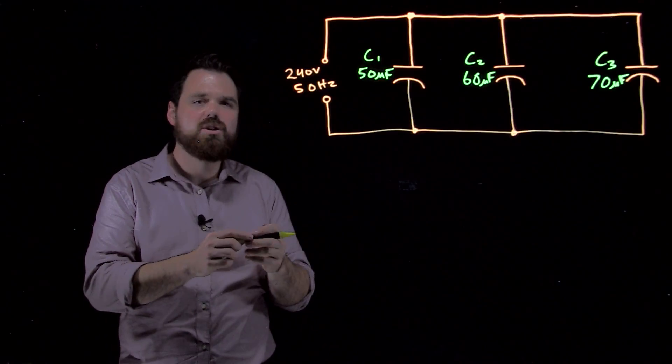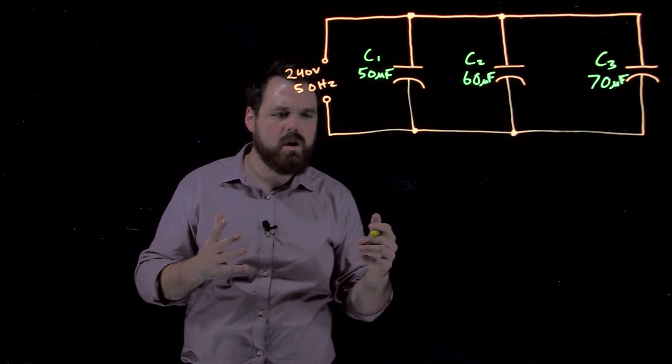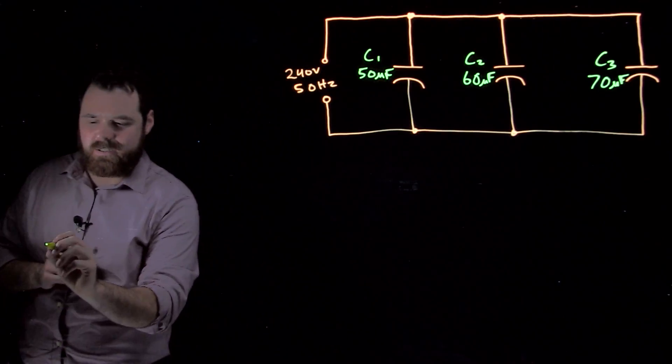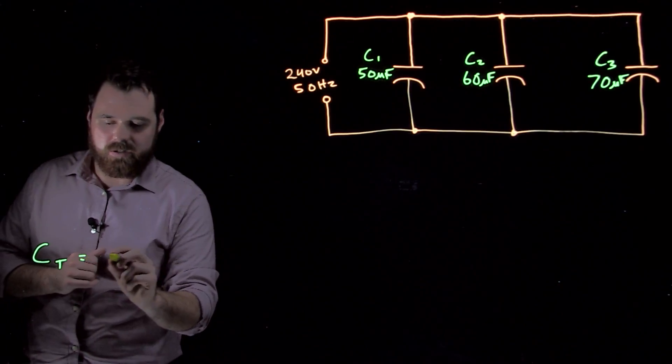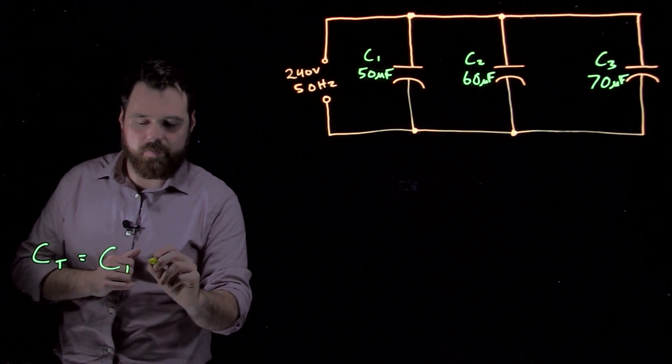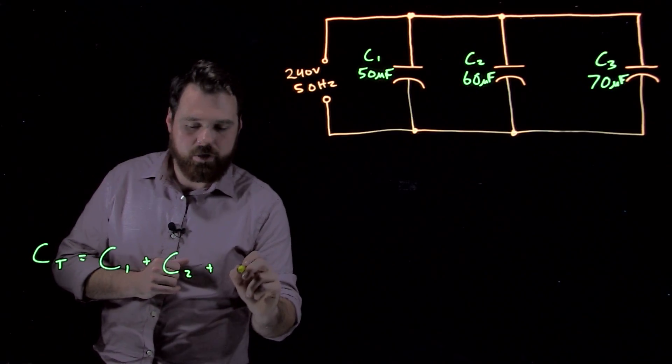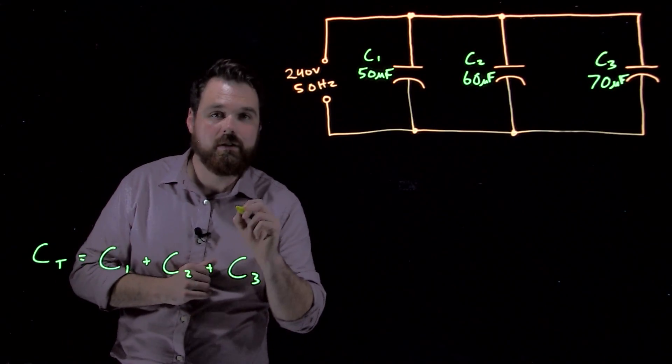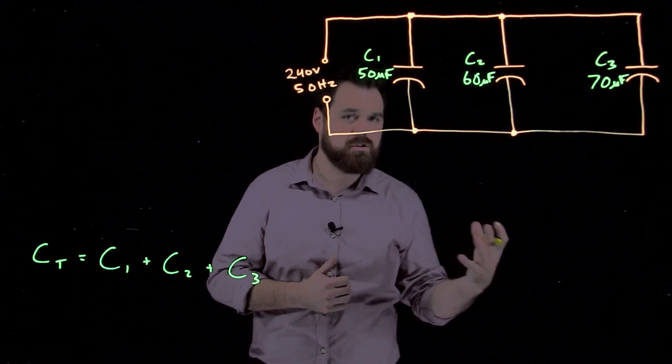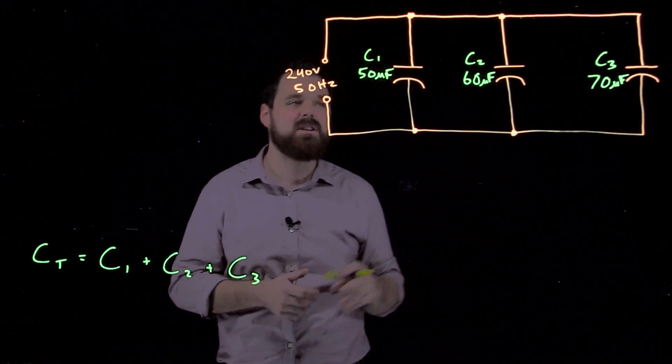So we get a new little formula going. We can say our capacitance total is equal to capacitance of capacitor 1 plus capacitance of capacitor 2 plus the capacitance of capacitor 3. CT equals C1 plus C2 plus C3.